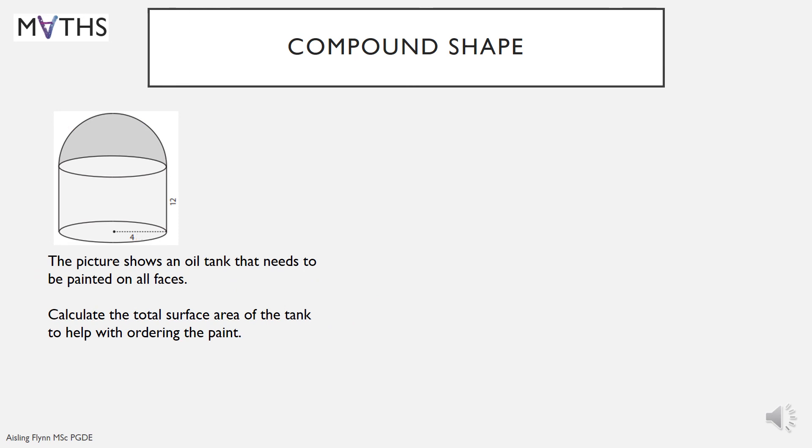So we're going to use that information to answer this question of a compound shape. Compound shape means more than one different shape stuck together. The picture shows an oil tank that needs to be painted on all faces. Calculate the total surface area of the tank to help with ordering the paint. Now it said all faces. So we're going to include underneath the base, the sides and the curved top.